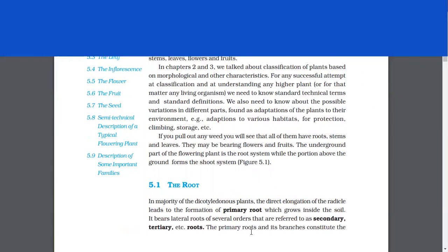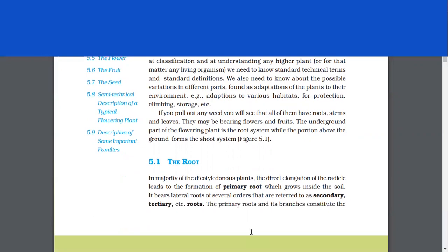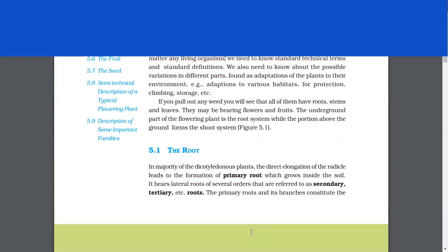If you pull out any weed, you will see that all of them have roots, stems and leaves. They may be bearing flowers and fruits. The underground part of the flowering plant is the root system while the portion above the ground forms the shoot system.